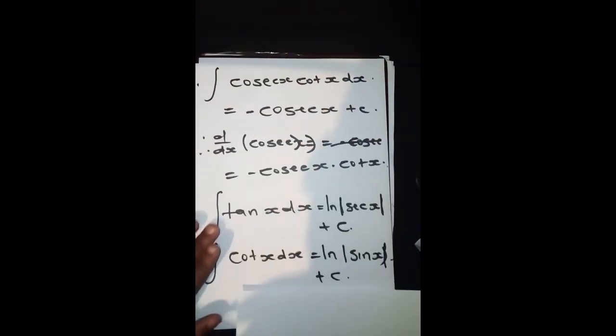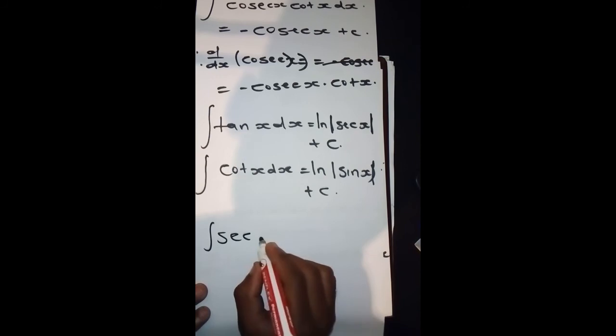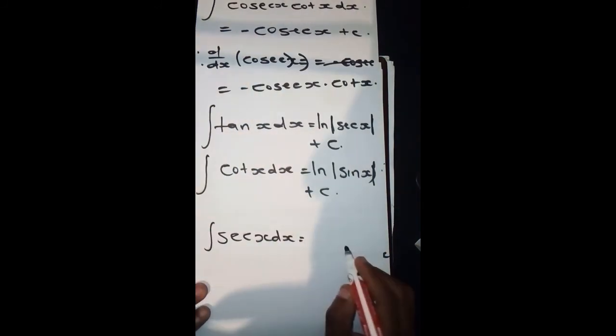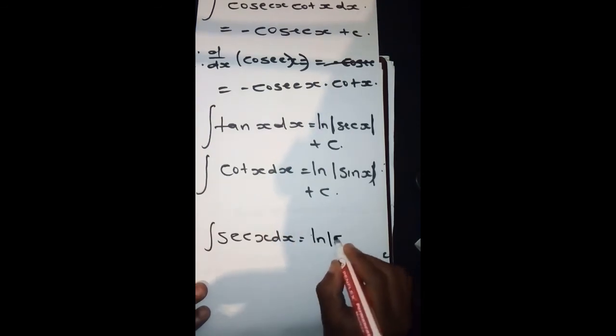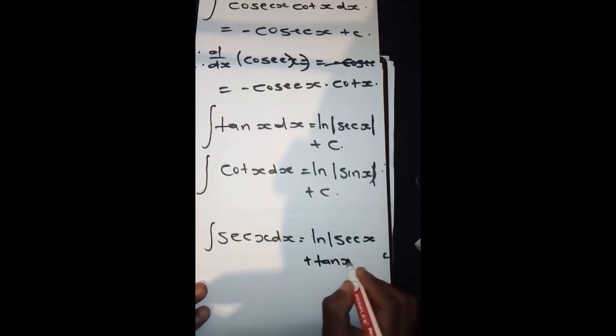And then the next one is sec(x)dx, which gives us ln|sec(x) + tan(x)| plus C.